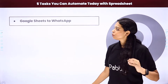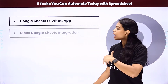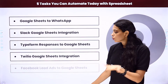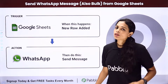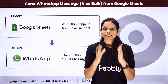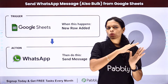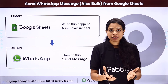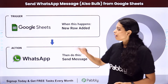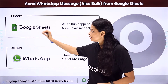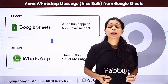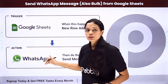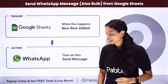We are going to see how to integrate Google Sheets with WhatsApp, Slack, Typeform, Twilio, and Facebook Lead Ads. Let's say you have to send WhatsApp messages to all your clients — season greetings or anything else in bulk. You have the information on Google Sheets and instead of typing individually to all your clients, you can just set up an automation and make your life a lot easier.